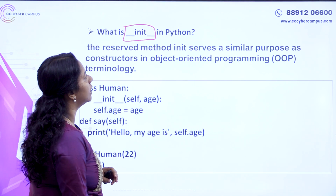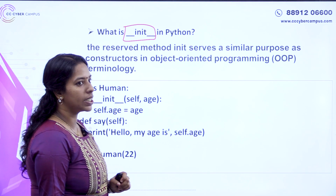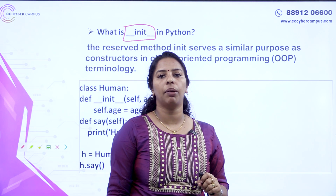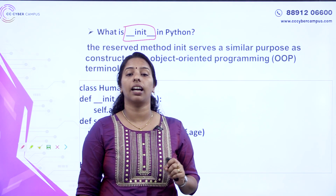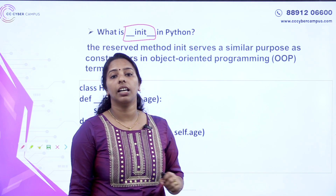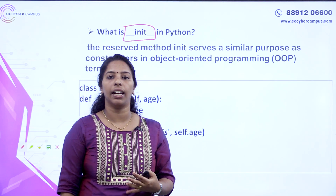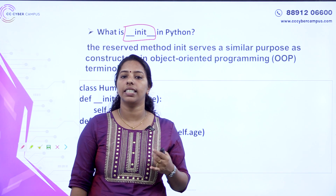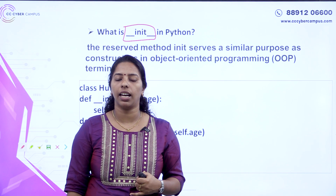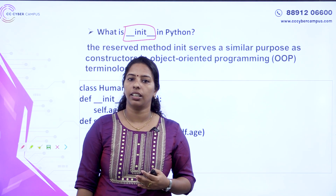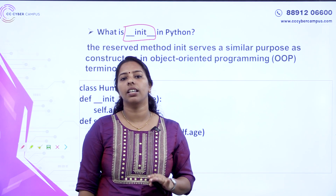The reserved method __init__ serves a similar purpose to a constructor in object-oriented programming. Why is it called a constructor? In object-oriented programming, we need to use construct and destruct. We need to initialize values. There is one type of constructor: a parameterized constructor and a default constructor. We use that constructor as a feature of Python.